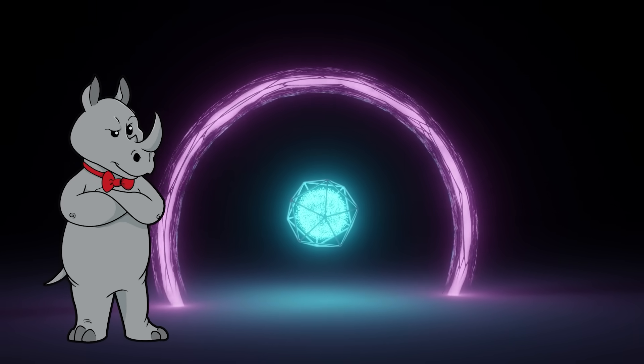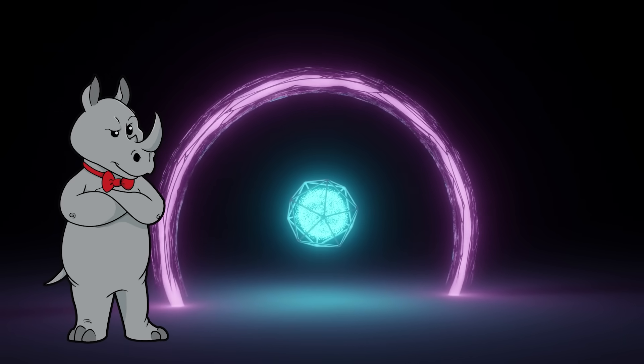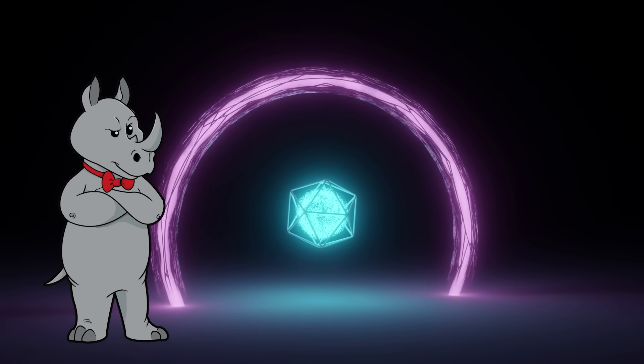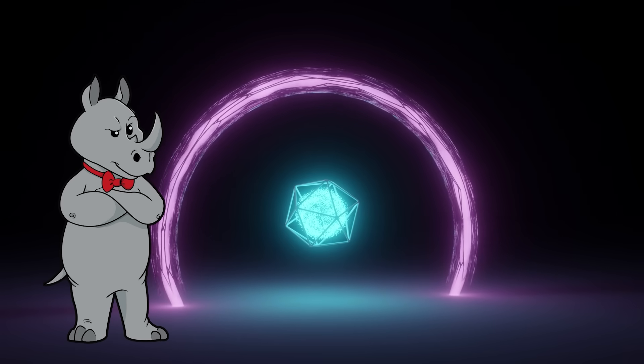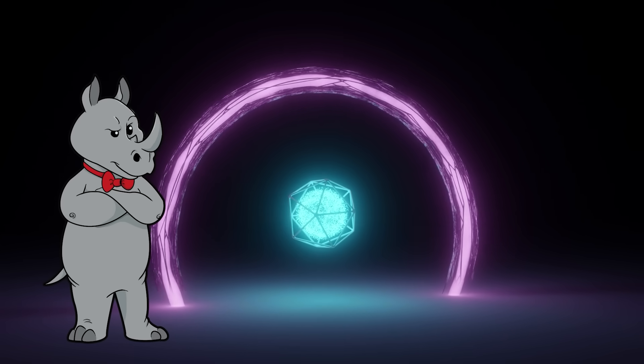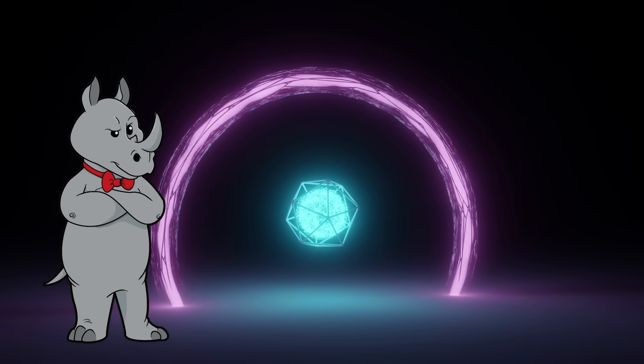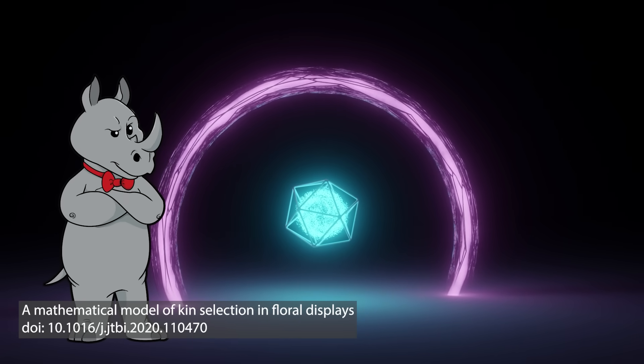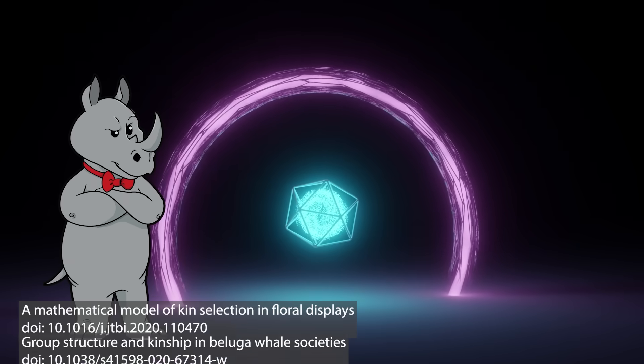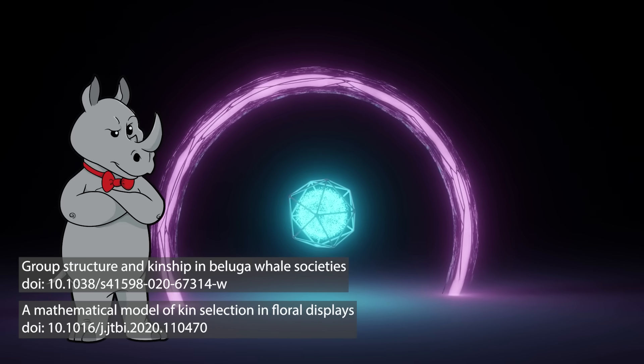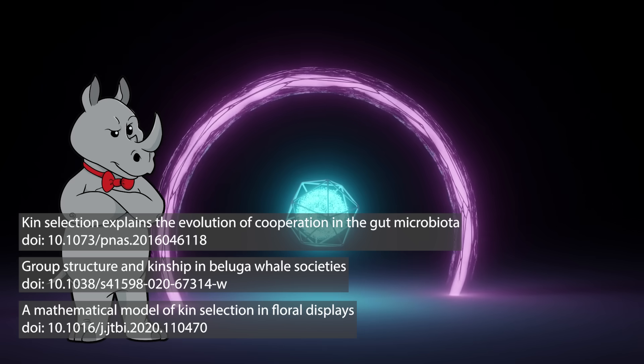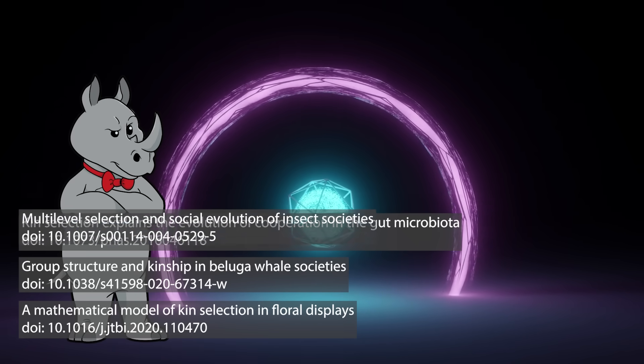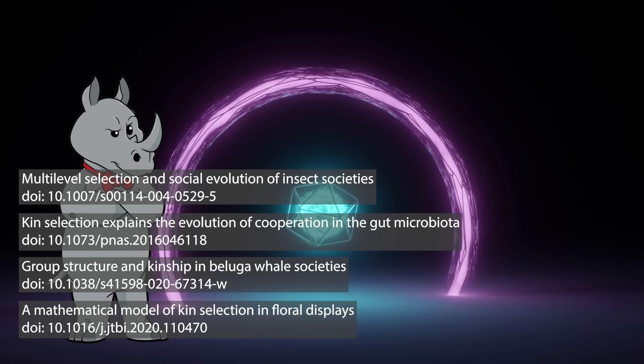We got great ideas, kin selection for altruism. Oh, so you are aware of the explanation for altruism. OK, so why would you even bring that up as something that is unexplained? Kin selection is a well understood aspect of evolution that explains all sorts of group behaviors. Floral displays that are optimized for maximizing the number of pollinators, the group structure of beluga whale pods, even the cooperation of gut microbes. And yes, even the evolution of social bees, along with other social insects.